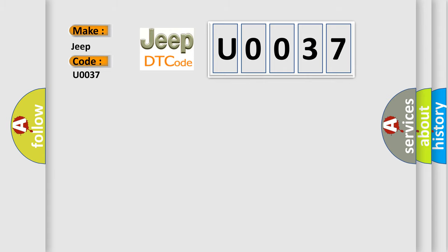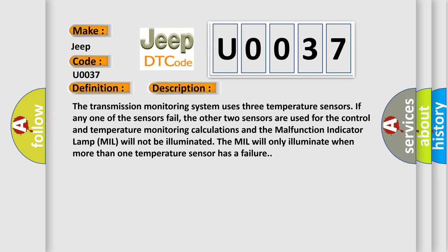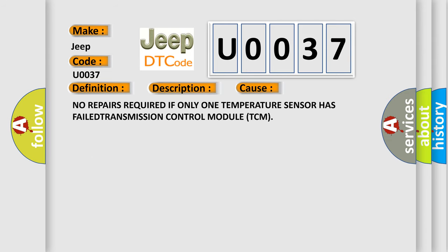The basic definition is: PCM-ECM-TCM Internal Temperature Sensor 2 Circuit. The transmission monitoring system uses three temperature sensors. If any one of the sensors fails, the other two sensors are used for control and temperature monitoring calculations, and the malfunction indicator lamp (MIL) will not be illuminated. The MIL will only illuminate when more than one temperature sensor has a failure. No repairs are required if only one temperature sensor has failed — Transmission Control Module (TCM).